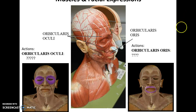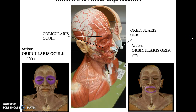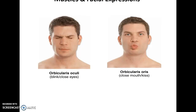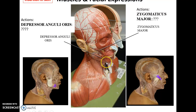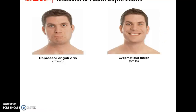Then we have two circular muscles: the orbicularis oculi that goes around the eyes, and the orbicularis oris that goes around the mouth or lips. The orbicularis oculi allows you to blink or close your eyes. The orbicularis oris allows you to close your mouth and even push your lips out for a kiss. Then we have the zygomaticus major muscle going from the zygomatic bone down to the corner of the lips, and the depressor anguli oris muscle coming from the mandible up to the corner of the lips. The depressor anguli oris helps you frown, while the zygomaticus allows you to smile or elevate the corners of your lips.